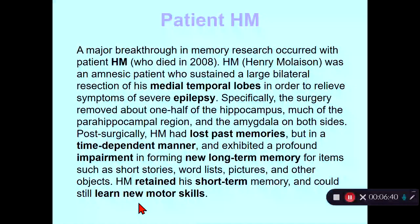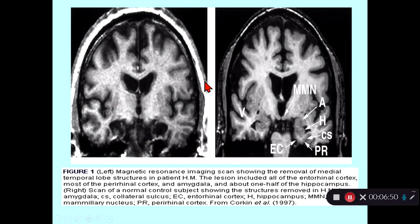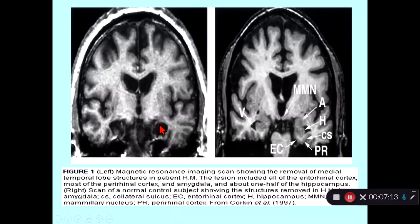He basically gave neuroscience its modern view of memory. These are MRI scans of two individuals — on the right is a normal individual, on the left is HM. You can see the hippocampus, above it the amygdala, and below it the parahippocampal region including entorhinal cortex (EC) and the parahippocampal and perirhinal cortex (PR). On the left, you can see these regions are missing from HM — a neurosurgeon used a suction device and literally sucked out the hippocampus, amygdala, entorhinal cortex, perirhinal cortex, and most of the parahippocampal cortex.